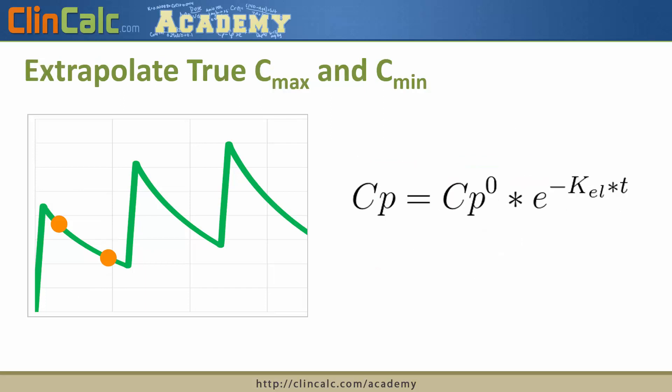Depending on the type of drug levels you obtain, you may need to back-extrapolate a true peak and/or a true trough for a patient, because we need those values for the next step. So if your peak level was drawn a little bit late, you might have to go back and figure out what would that drug level be as a true peak.